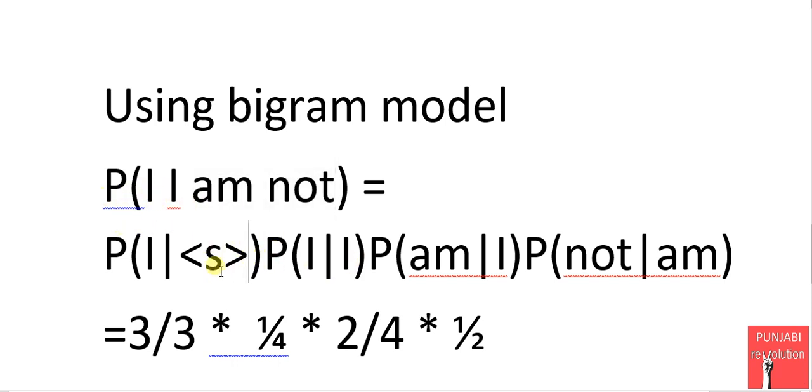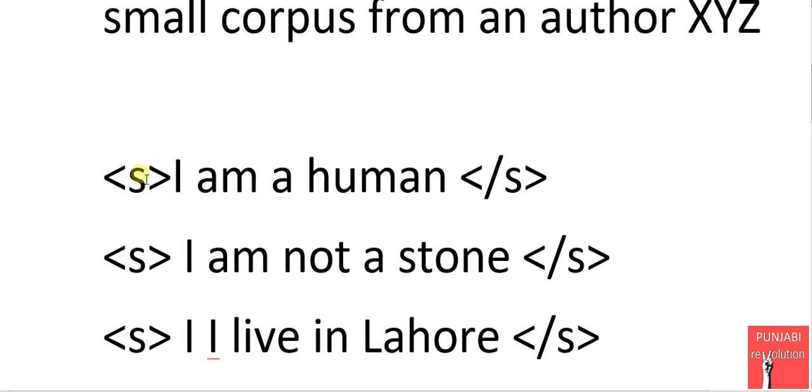Probability of I given <s> means the count of <s>I divided by the count of total <s>. There are three total <s>, so it's 3 over 3.